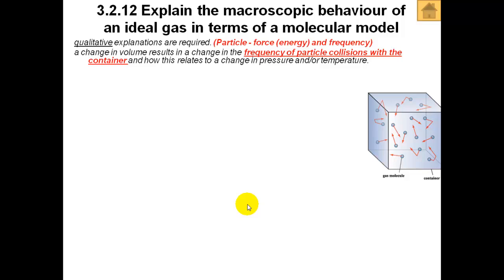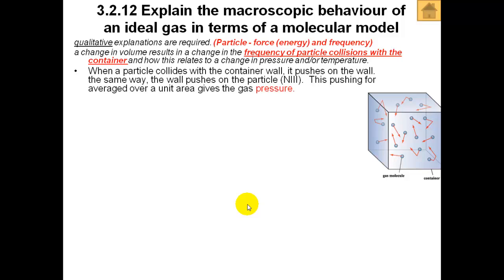I mentioned specifically because it's the walls of the container. When you measure the pressure inside the gas, we're not interested in the frequency of collisions between the molecules. That does not give the pressure. The pressure is measured by the device which is inserted, in other words, the pressure is measured by the device which is attached to the inside of the wall of the container. So when the particle collides with the container wall, it pushes against the wall, which means that the wall must push back. And this pushing force over a certain area gives the gas pressure.